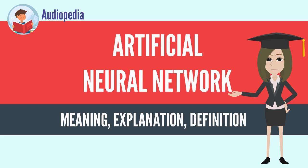An ANN is based on a collection of connected units or nodes called artificial neurons, which loosely model the neurons in a biological brain. Each connection, like the synapses in a biological brain, can transmit a signal from one artificial neuron to another. An artificial neuron that receives the signal can process it and then signal additional artificial neurons connected to it. In common implementations, the signal at a connection between artificial neurons is a real number, and the output of each artificial neuron is computed by some non-linear function of the sum of its inputs.